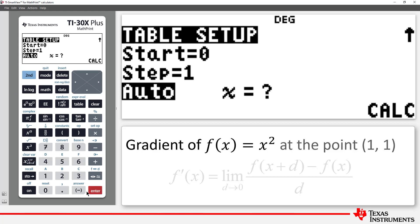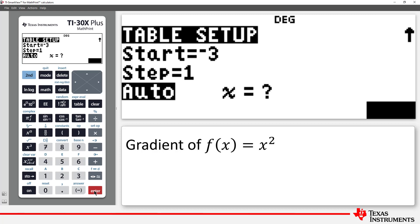Now remember that currently, d is equal to 0.001, a relatively small value, so we should get reasonable estimates for the gradient at each point on the curve, using the table. I'll start at negative 3, in steps of 1, and automatically generate the table.